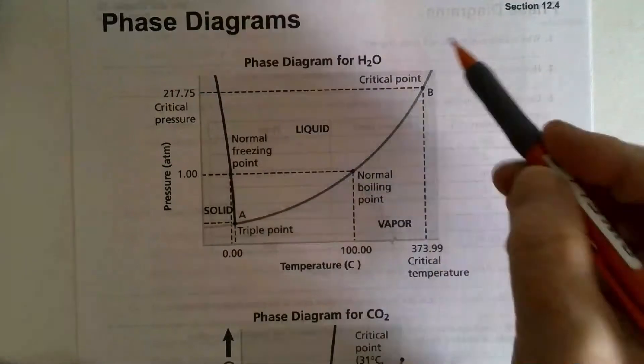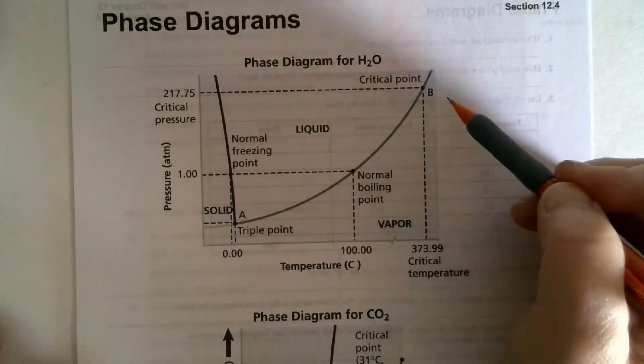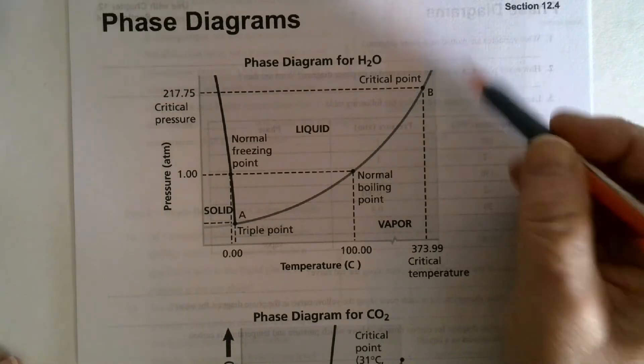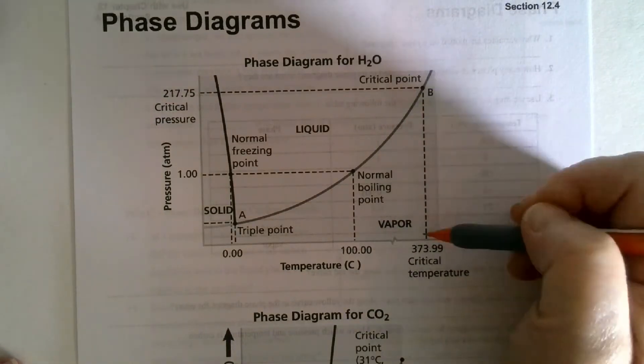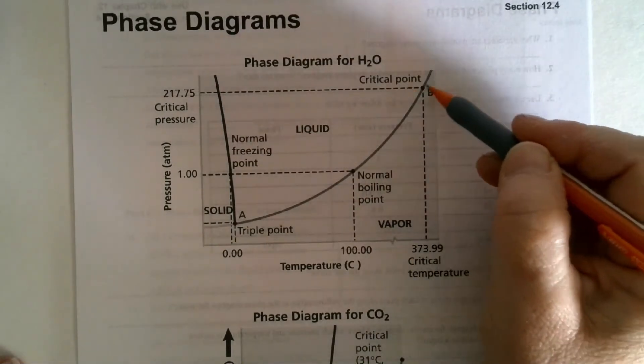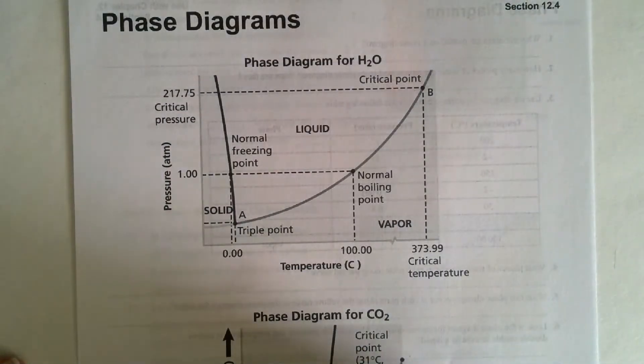This is your critical pressure. This is the point at which readings just cannot take place. And we have a critical temperature also. At this temperature and at that pressure, you cannot distinguish between a liquid and a vapor.